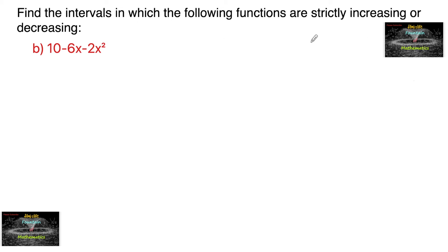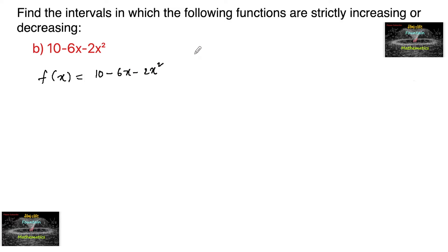Find the intervals in which the following functions are strictly increasing or decreasing. Given function f of x is equal to 10 minus 6x minus 2x squared. To find the intervals in which the functions are either decreasing or increasing, we consider that f dash of x is equal to 0.